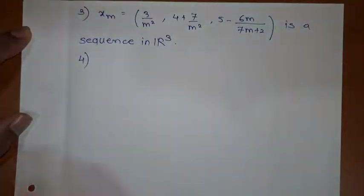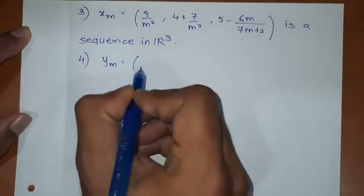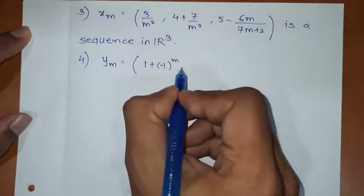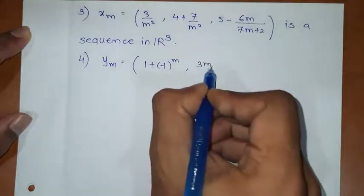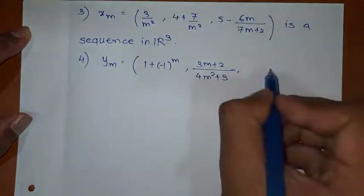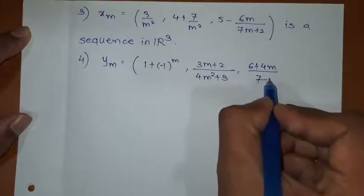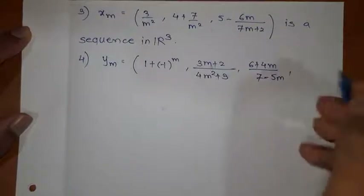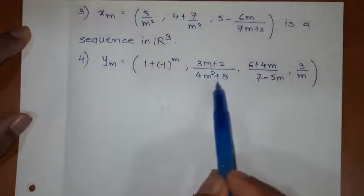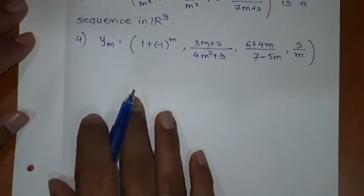Let us discuss one more example. Instead of x, I will use y — it doesn't matter, you can take any variable. So: ym = (1 + (-1)^m, (3m+2)/(4m²+3), (6+4m)/(7-5m), 3/m). Tell me how many components: first, second, third, and fourth — four components are there. So we can declare this is a sequence in R4.